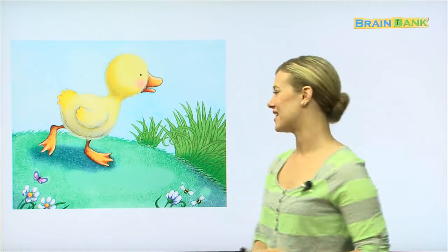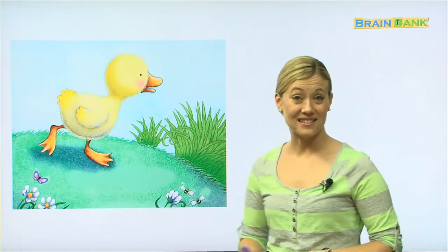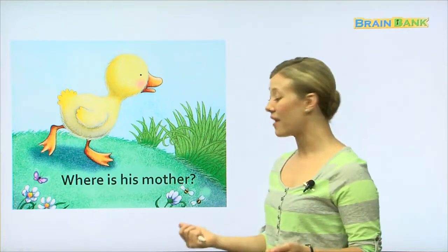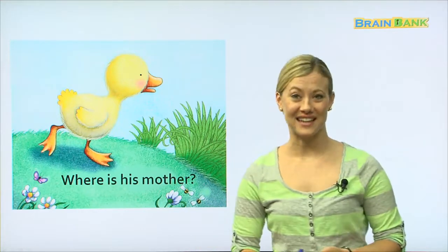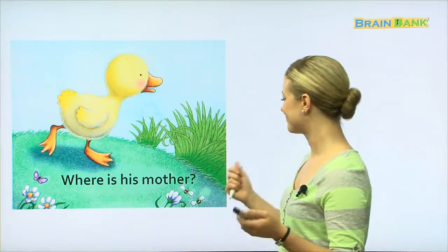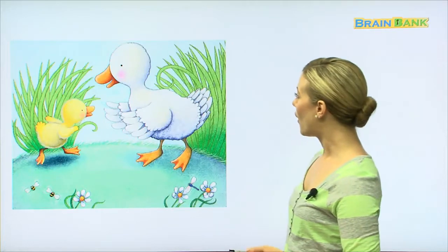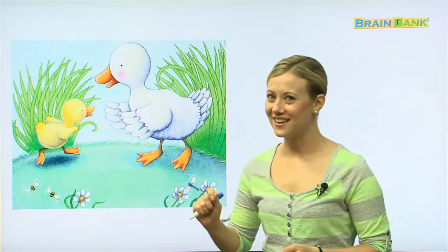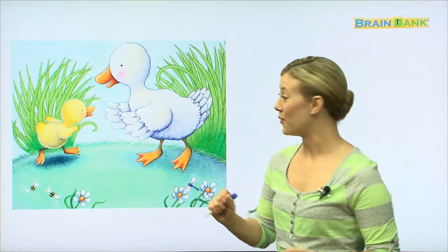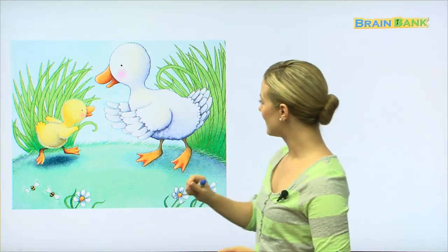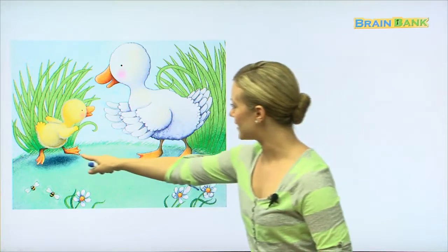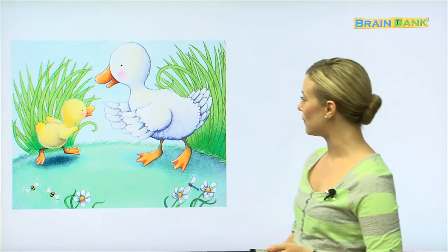He looks very frustrated and sad. He still hasn't found his mother. Where is his mother? Let's read it all together. Where is his mother? I don't know. Could this be the duckling's mother? I think so. I see a beak, and I see feathers, and I see the same kind of webbed feet for swimming.